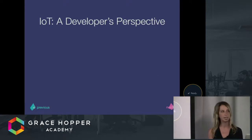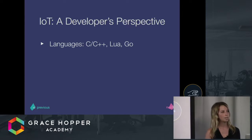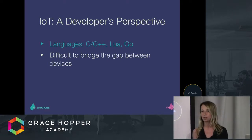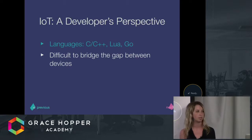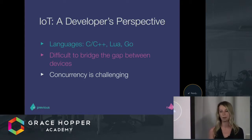Here's the current landscape right now. Most of these devices are programmed in low-level languages like C, C++, Lua, and Go. A lot of these devices are programmed in different languages — you have a Myo wristband that's programmed in Lua, and how can you make it talk to your Arduino that's programmed in C? It's really difficult to bridge the gap between these devices unless you have a working knowledge of how all these languages interact. And concurrency is really challenging — you're spawning multiple threads, trying to track what's happening. There should be an easier solution, right?